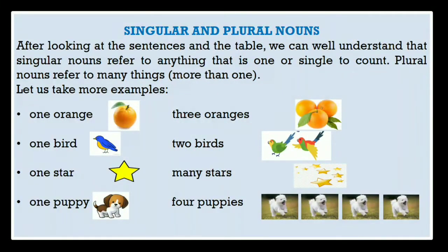Singular and plural nouns. Dear students, after looking at the sentences and the table, we can well understand that singular nouns refer to anything that is one or single to count. Plural nouns refer to many things, that is more than one. Let us take more examples. Here, first one is one orange — it is singular and its plural is three oranges. Next, one bird — plural, two birds. One star — singular — and its plural form is many stars. One puppy — plural form, four puppies.